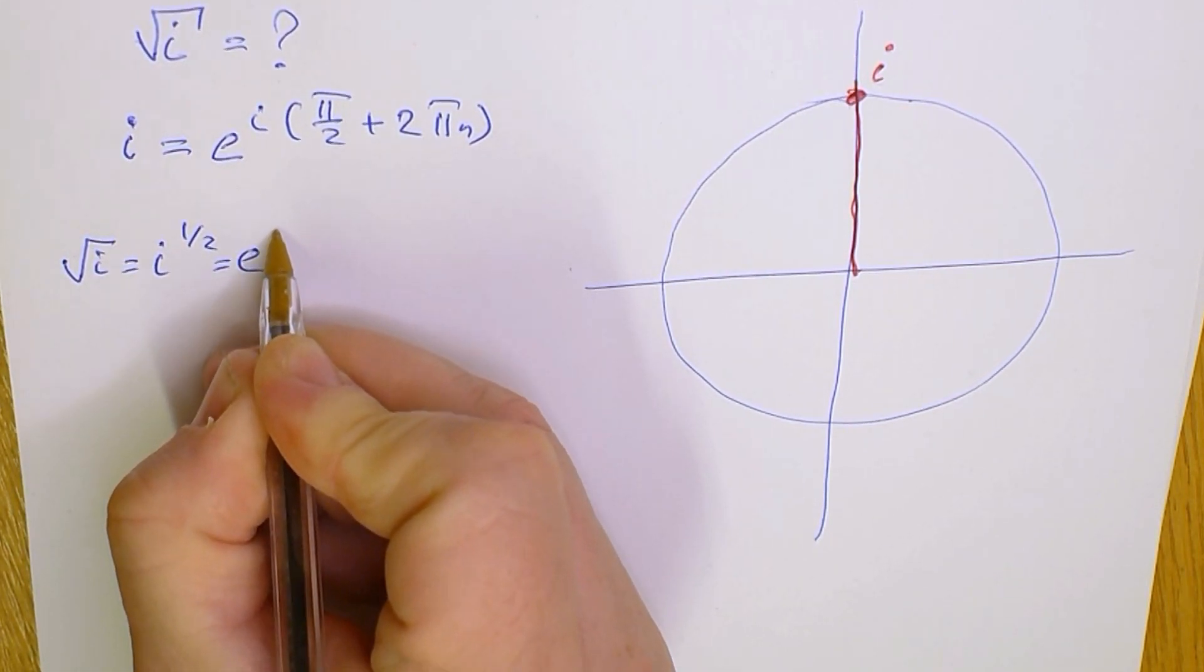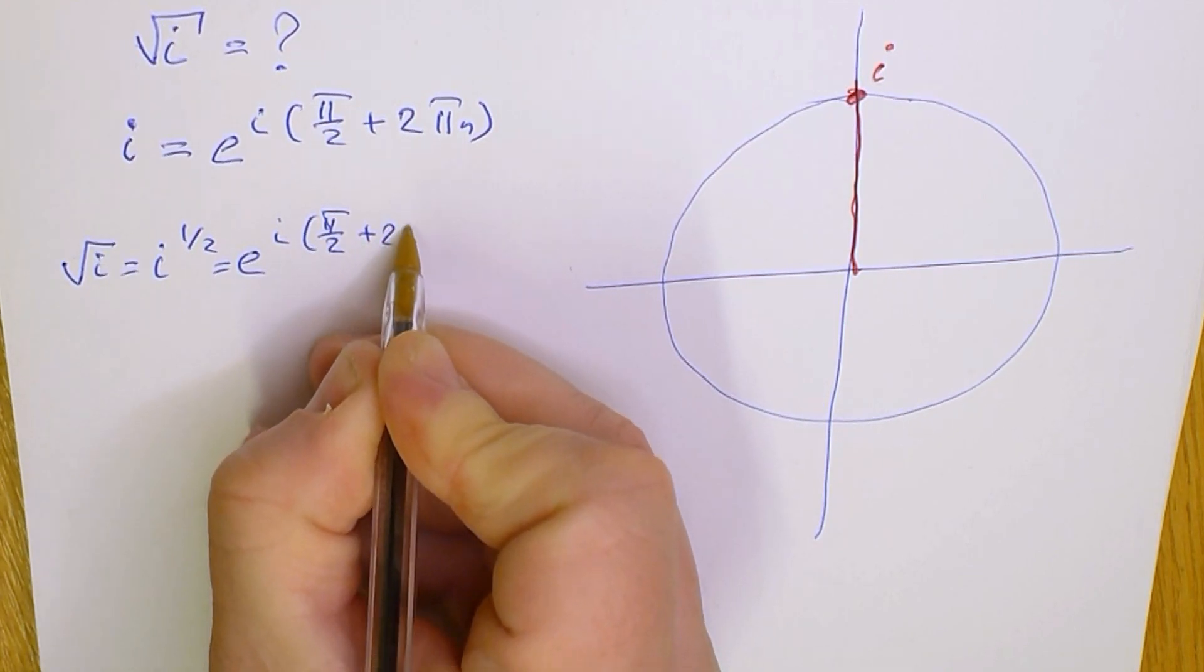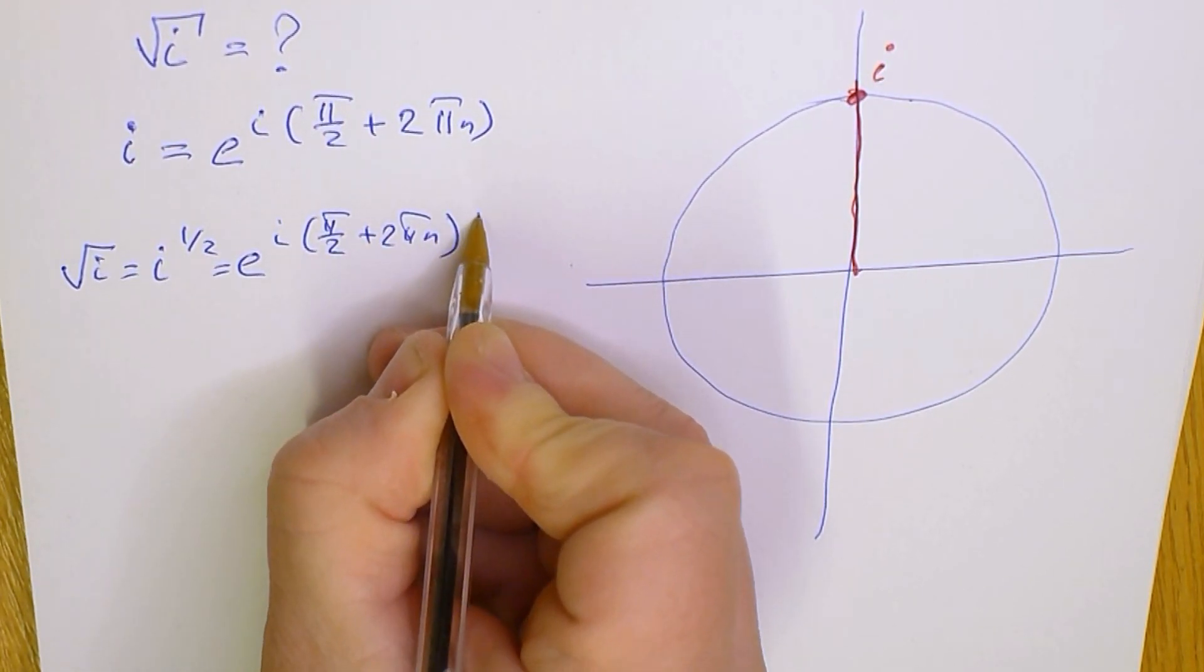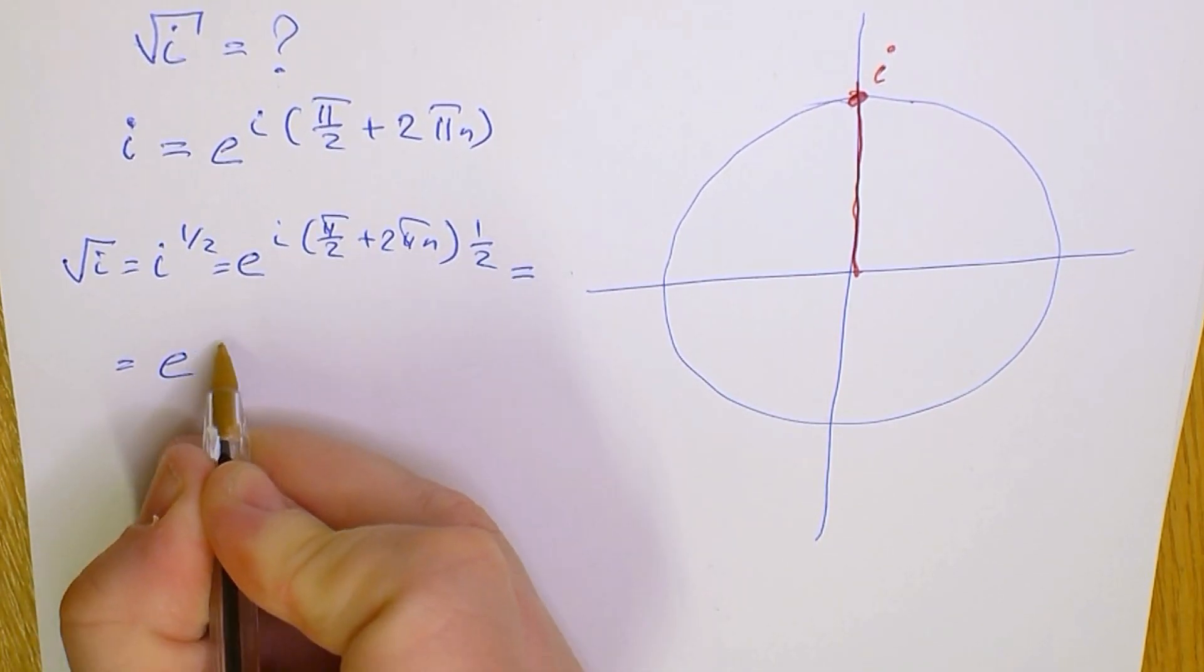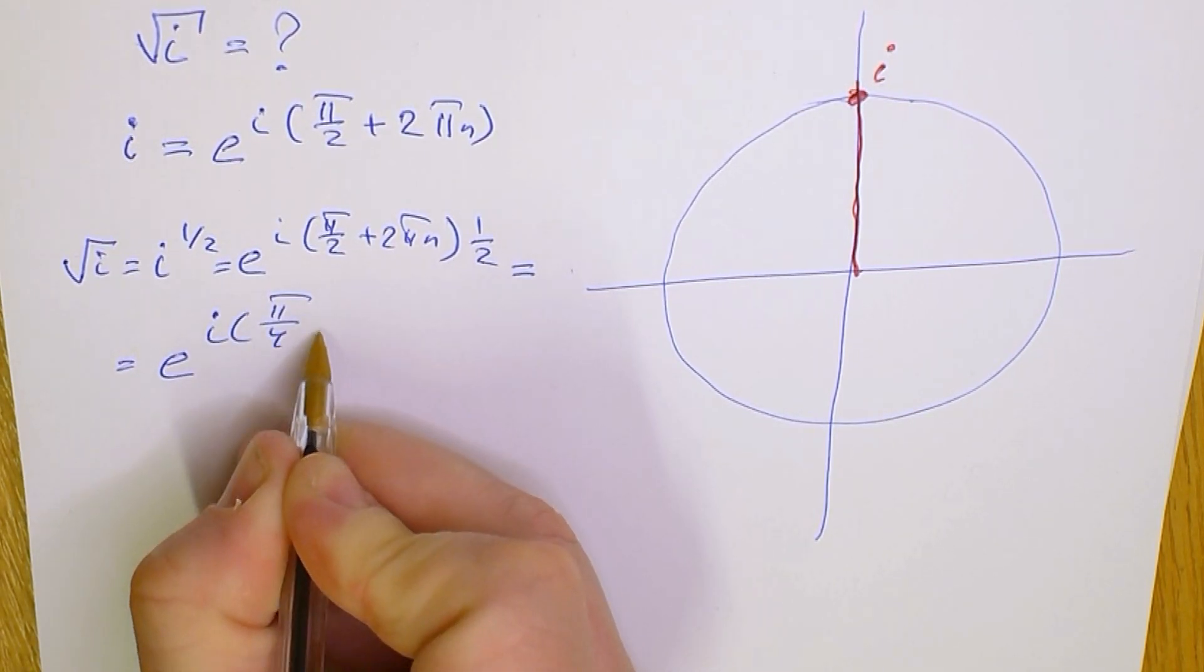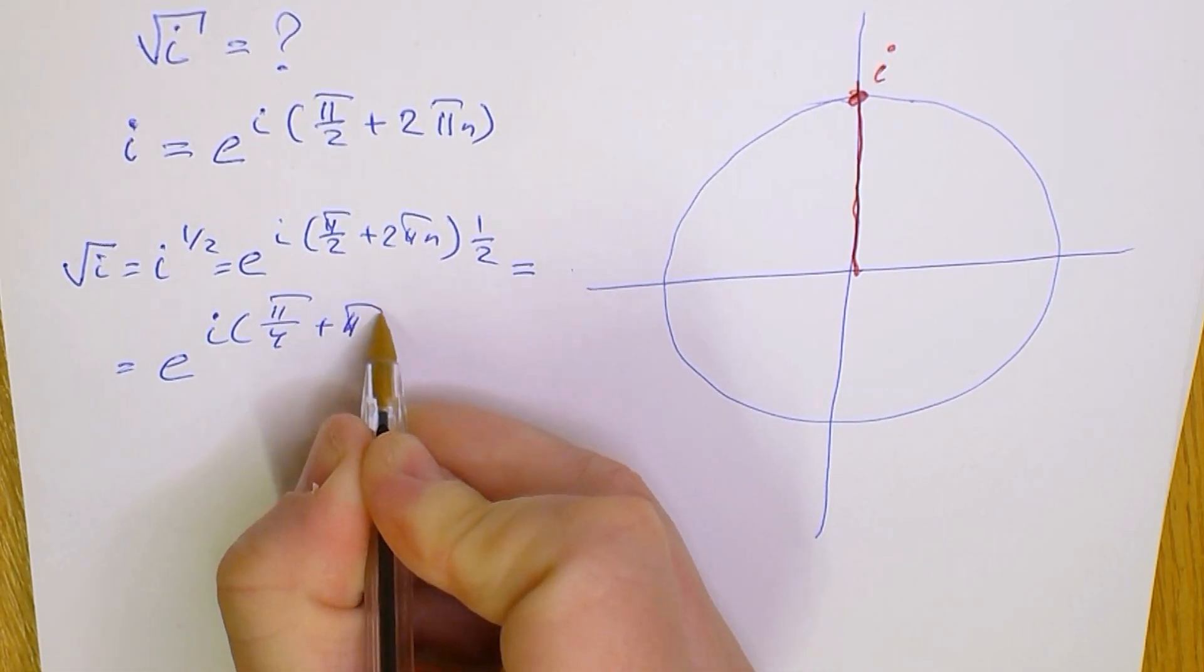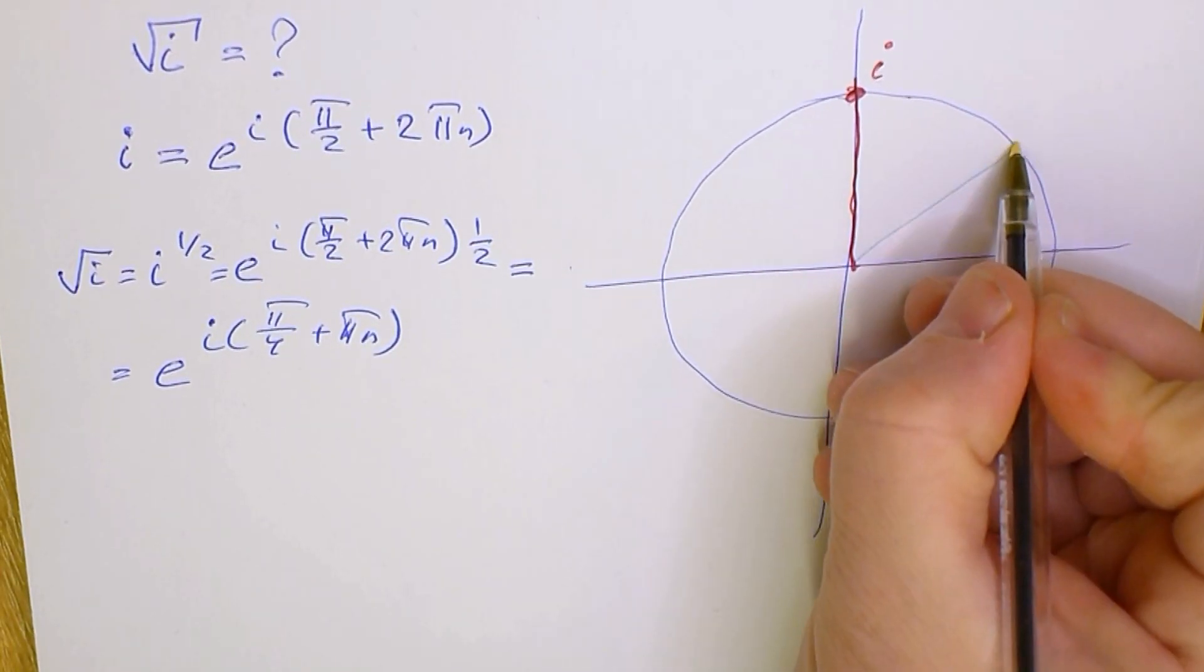Square root of i equals i to the power 1 half, which equals e to the power of i times pi over 2 plus 2 pi n, all multiplied by 1 half. This equals e to the power of i times pi over 4 plus pi n. That's it.